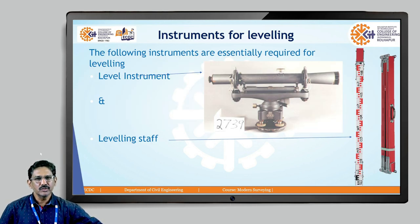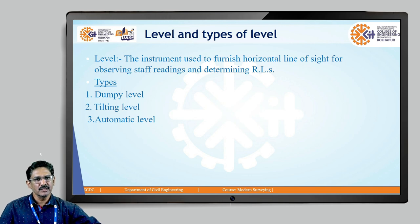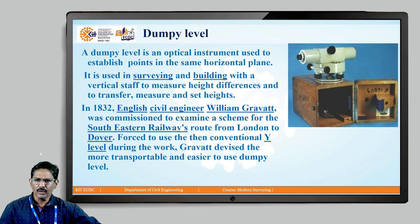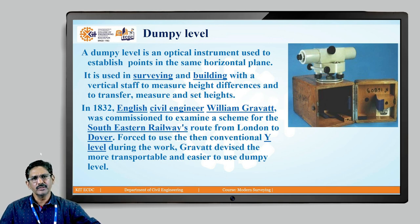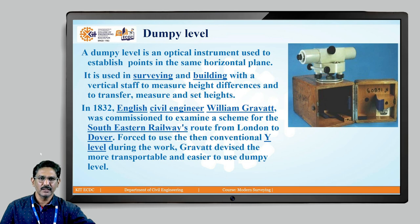The basic instrument, the dumpy level, consists of two major tools: the leveling instrument and the leveling staff on which observations in the vertical plane are taken. The three major types most popularly used are the dumpy level, the tilting level, and the automatic level. The dumpy level is still being used but is slowly being replaced by more modern instruments. It is an optical instrument used to establish points in the horizontal plane and is used in surveying and building with a vertical staff to measure height differences.